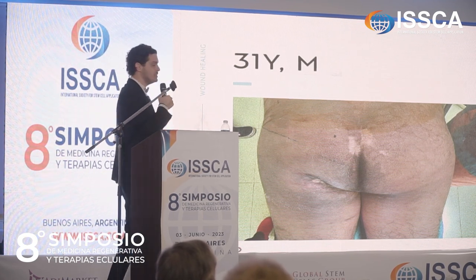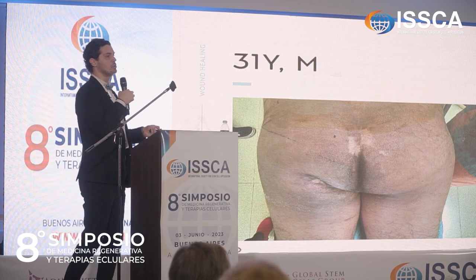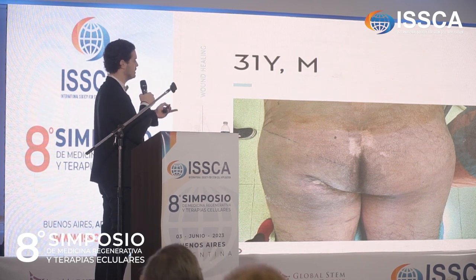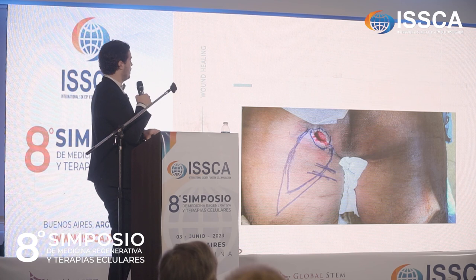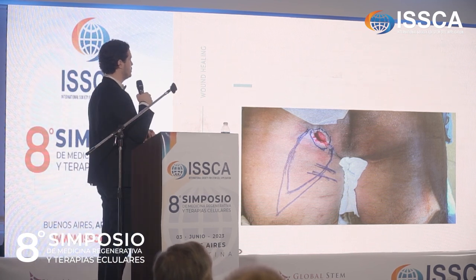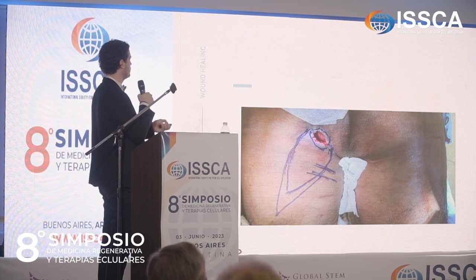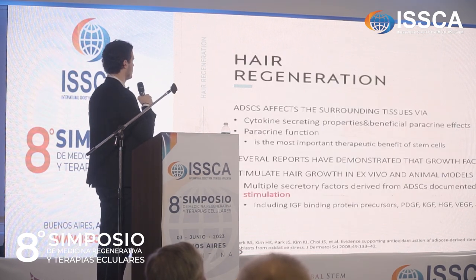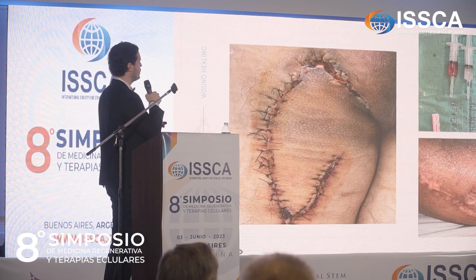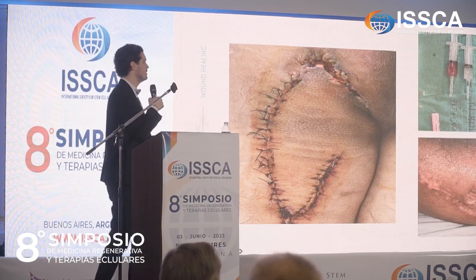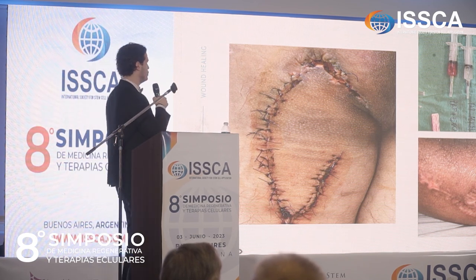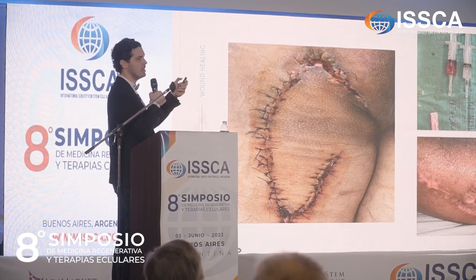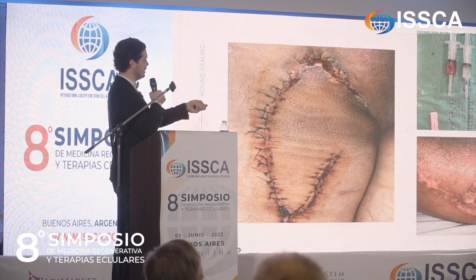This is a 31-year-old male patient who is paraplegic after a motorbike accident, suffering from an atonic wound — an ischial pressure sore. I performed a flap to close the wound, but after the operation the wound reopened, as sometimes these cases are very difficult to close in one session. In the second session I did a small surgical procedure combined with stem cells, and this is him after two months.